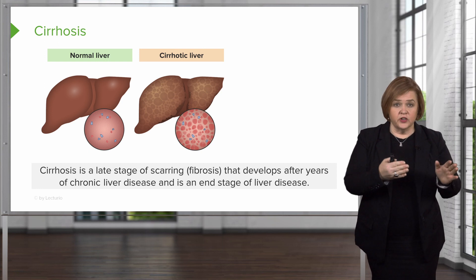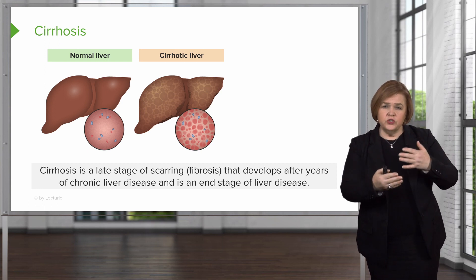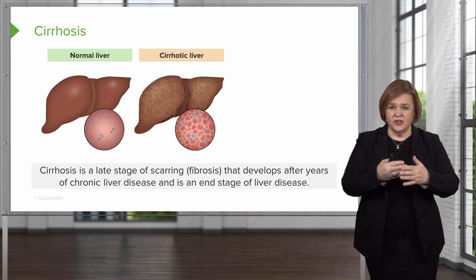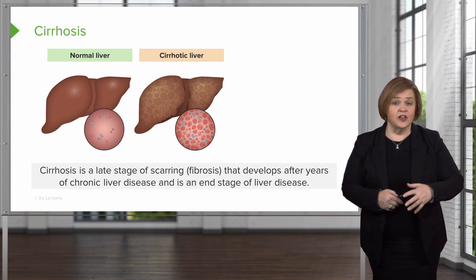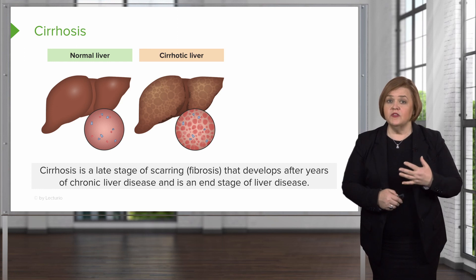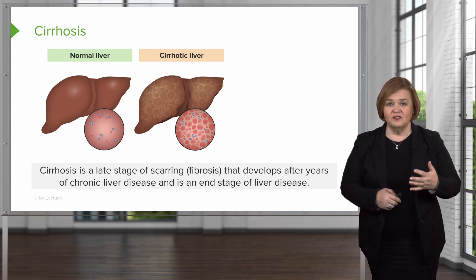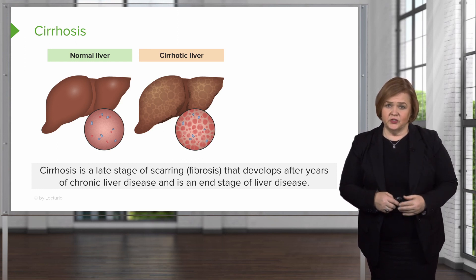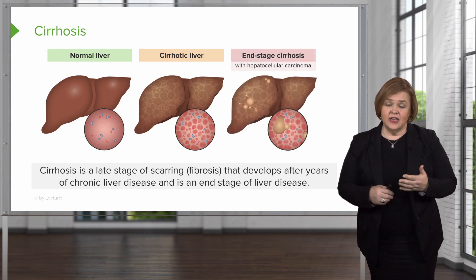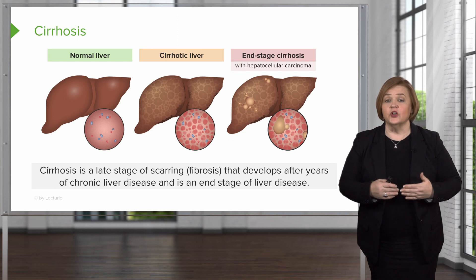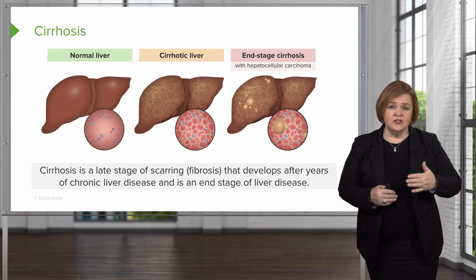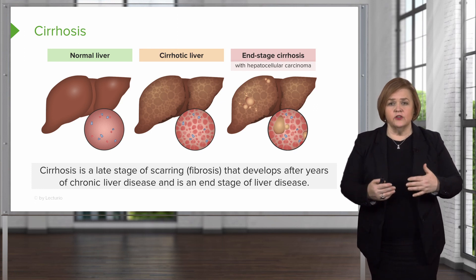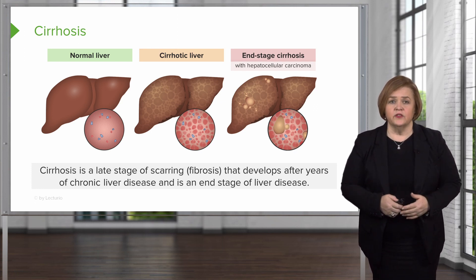So we started with the normal liver, then showed you what it looks like with a cirrhotic liver, and you can tell just from looking at our picture that this liver is going to struggle and have problems with all of the processes the liver is involved in. Now the last picture is tragic — that is end-stage cirrhosis, or liver failure, and you're going to have liver cancer. Sadly, if the patient doesn't have lifestyle changes or intervention, they can end up with liver failure.